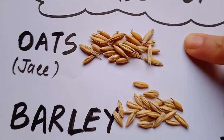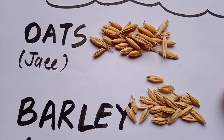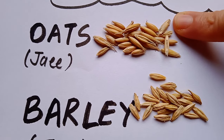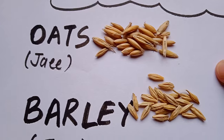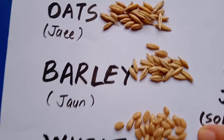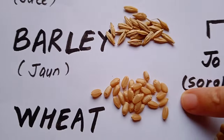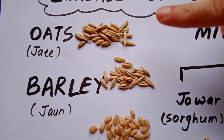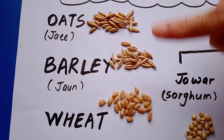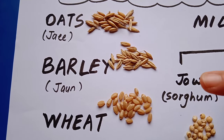You all can compare easily that they look quite similar to each other. Now if I remove the chaff of the oats and barley, they look quite similar to wheat grains. So wheat, barley and oats - they belong to the grass family only, and they look quite similar to each other.